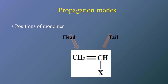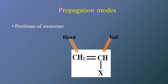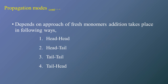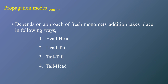Before going to the actual modes, we will see what are the positions of a monomer that can be referred. We will see on the screen a vinyl monomer, where any monomer can be positioned according to their location. The starting point is called as a head while the end point is called as a tail. Based on this head and tail position, there are four different ways of propagation.